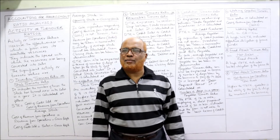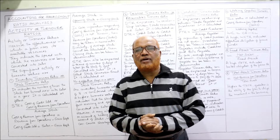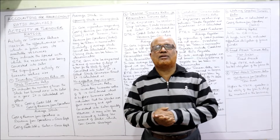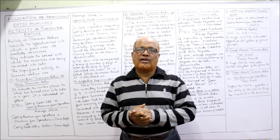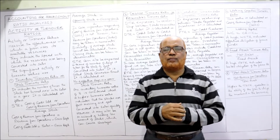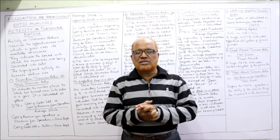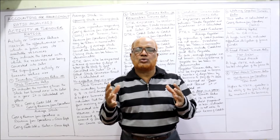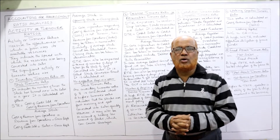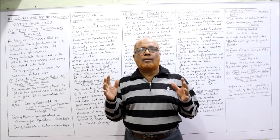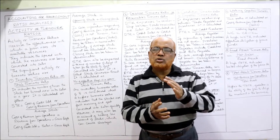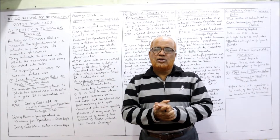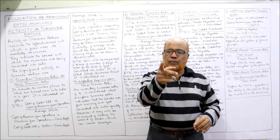Hello viewers, welcome to my channel. I am Harsha Mali Khan. In the last two videos I completed two categories of ratios: liquidity ratio and solvency ratio. This is the third category, called activity or turnover ratio. In this video I am going to explain what activity or turnover ratio means and the different significant ratios under this category. Watch all the videos from the beginning for complete knowledge.